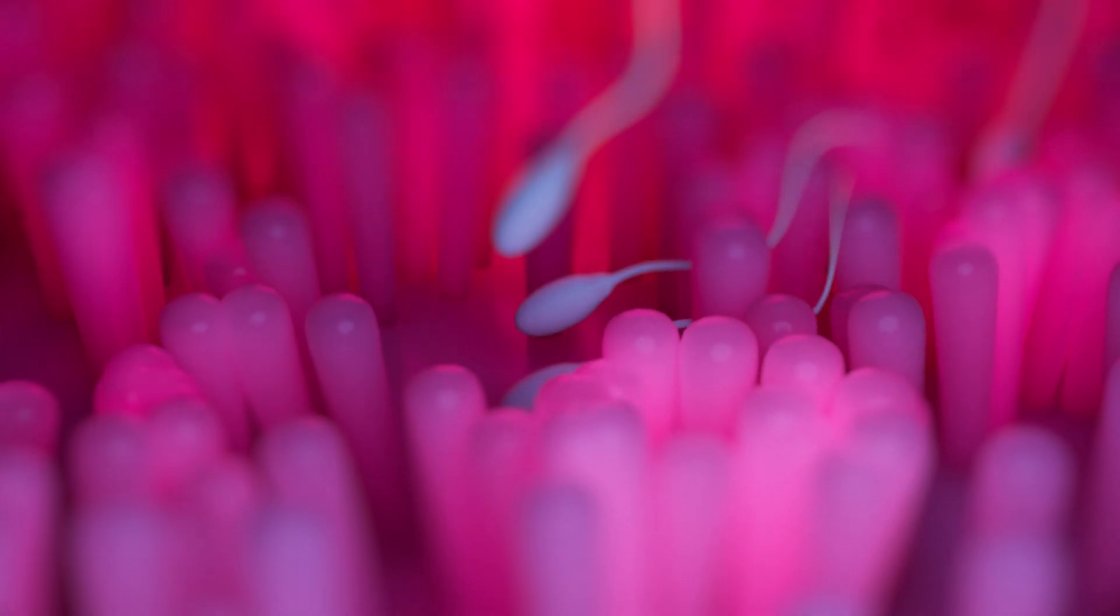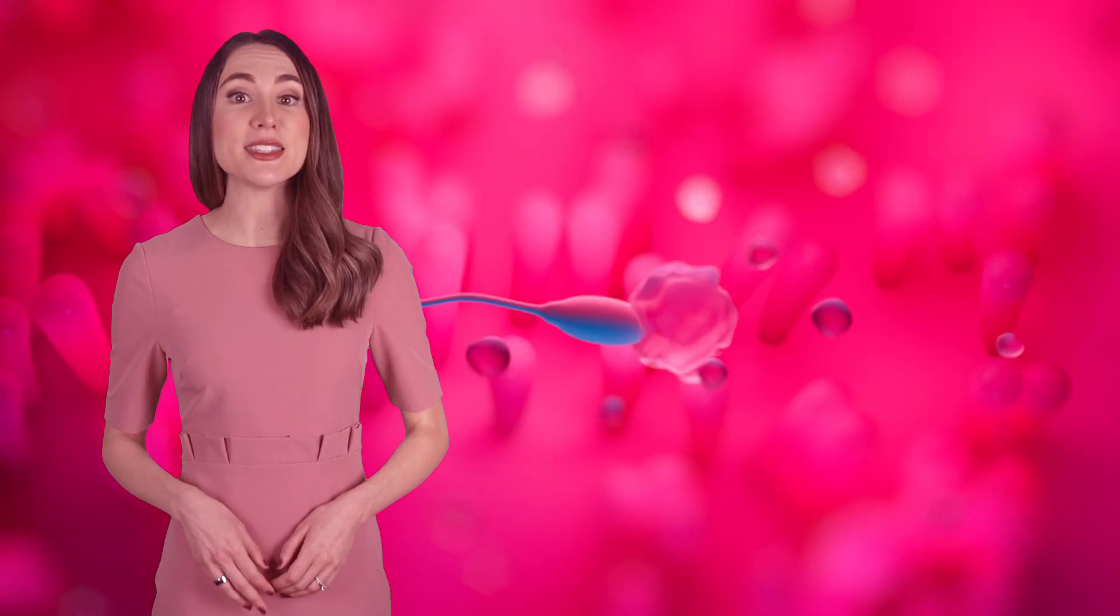Inside the uterus, muscular contractions assist the sperm in progressing towards the egg. However, the woman's immune system cells mistakenly recognize the sperm as invaders, leading to the destruction of thousands of them.